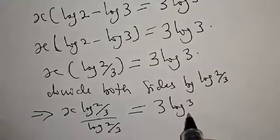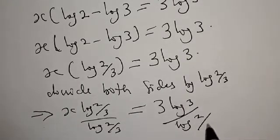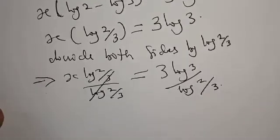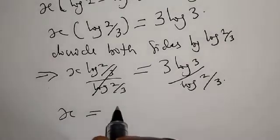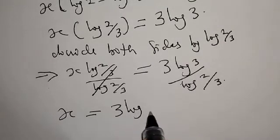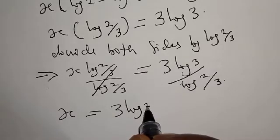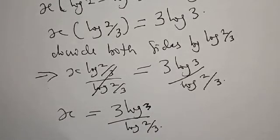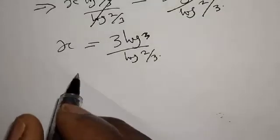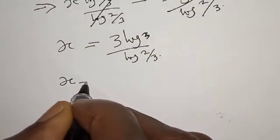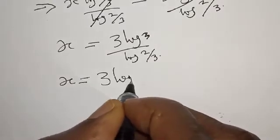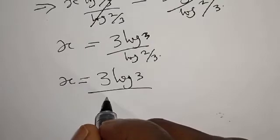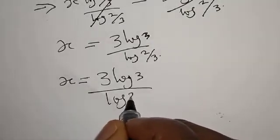This implies that x equals 3 log 3 over log of 2 over 3. Our final answer is x is equal to 3 log 3 over log 2 over 3.